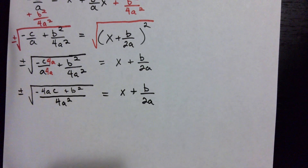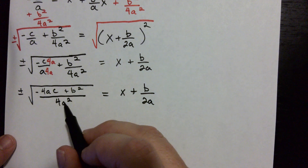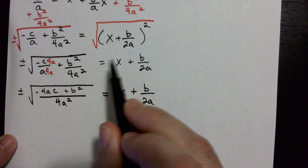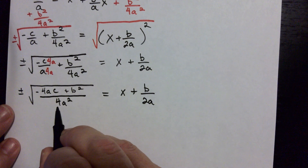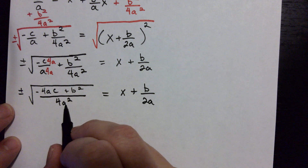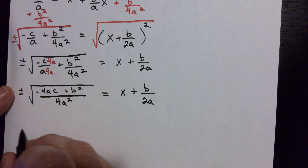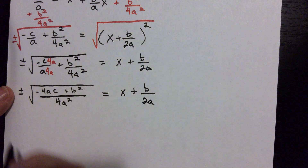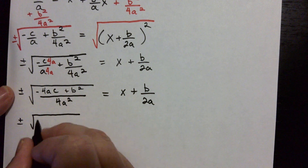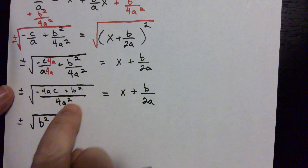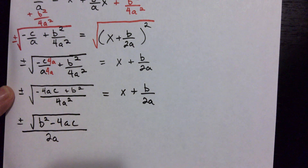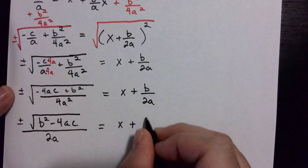This should really be starting to look like the quadratic formula now. We can square root the top and bottom separately inside the radical. We know the square root of 4 is 2 and the square root of a² is a, so the denominator becomes just 2a with no square root. On top, I'll write b² first since it's positive, then minus 4ac — that's the only change on top. So we have: plus or minus √(b² − 4ac) over 2a, equals x + b/(2a).